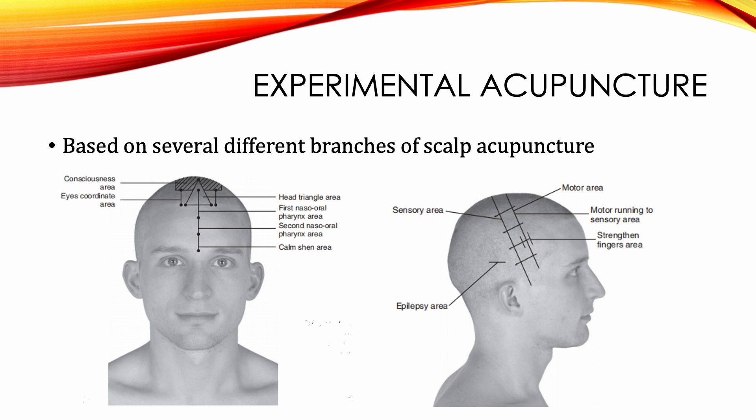Experimental Sculp Acupuncture is based on several different branches of Sculp Acupuncture. Many acupuncturists and health practitioners continue to study and research Sculp Acupuncture clinically. They continuously find many new points that have special functions to treat a variety of diseases, although a system has not been developed yet. However, good results are occurring in clinical practice. Some of these points are introduced for reference.